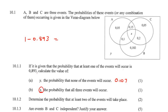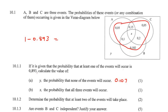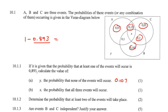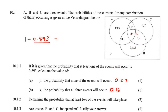Now it says what is the value of X, the probability that all three events would occur? This is easy because we know that all of these add up to 0.893. So you could just say 0.893 minus all of the other values. Going to quickly do that: 0.893 minus all of those, and that'll be 0.16. So X is 0.16.